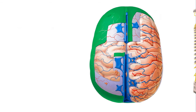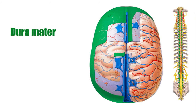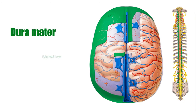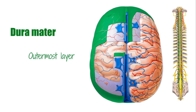The dura mater is the outermost layer of the three meningeal layers that cover the brain and the spinal cord. These membranous connective tissue layers, altogether known as the meninges, are named the dura mater, the arachnoid mater, and the pia mater.